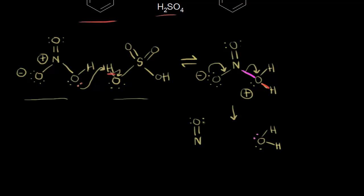When water leaves, that leaves what's called the nitronium ion behind. Let me draw the nitronium ion. These electrons moved in to form a pi bond. For formal charges, this nitrogen has a plus-one formal charge. That nitrogen is actually sp hybridized, which makes the nitronium ion linear. The nitronium ion is positively charged — this is going to be the electrophile in our mechanism.